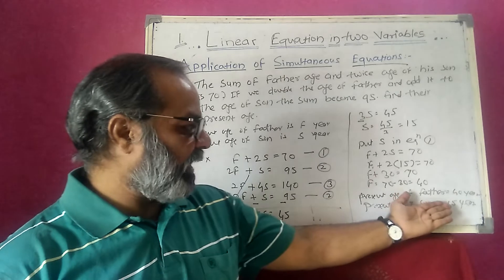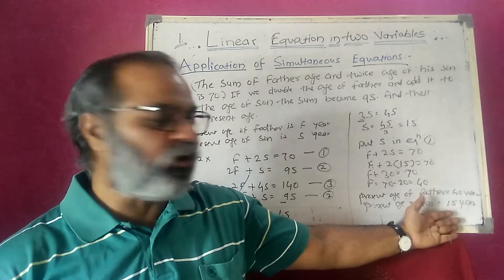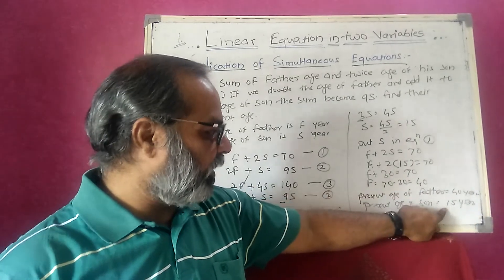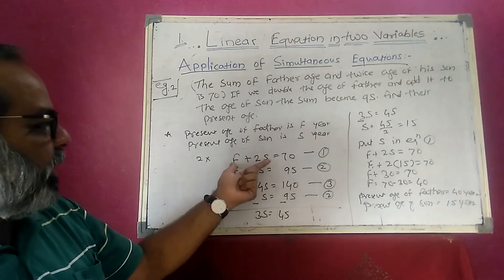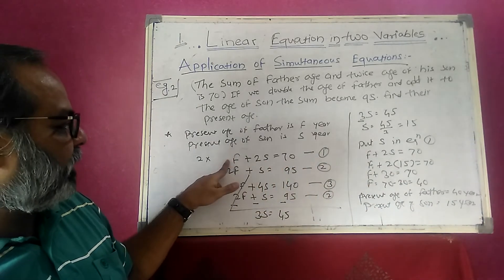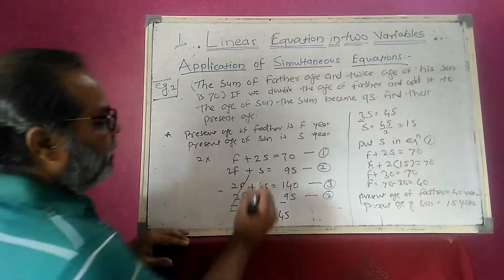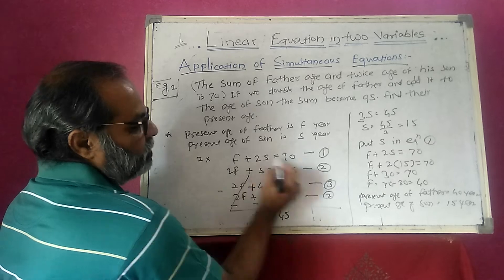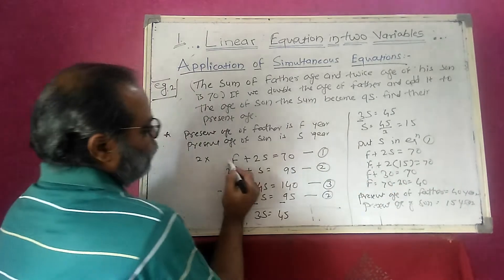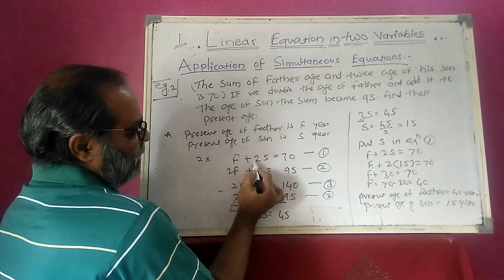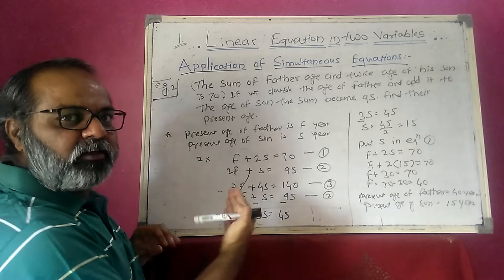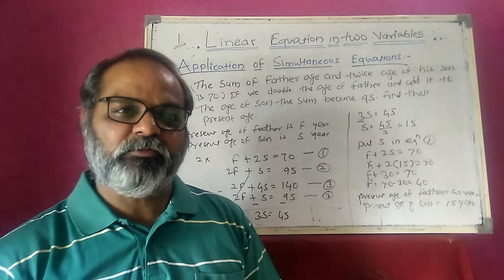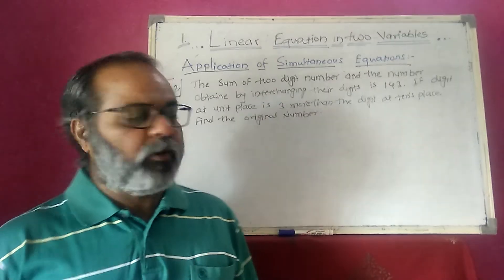We can verify whether our answer is correct. Father's age is 40, son's age is 15. Substituting: f plus 2s equals 40 plus 2 times 15 equals 40 plus 30 equals 70. The left-hand side equals the right-hand side, so the answer is correct.